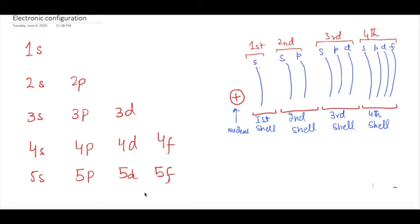This is lecture number 2 for A-level chemistry. On the left hand side you can see a diagram showing 1s, 2s, 2p, 3s, 3p, and 3d.